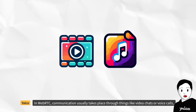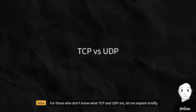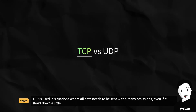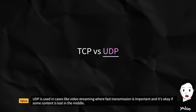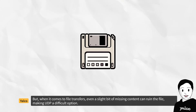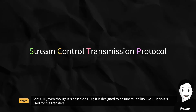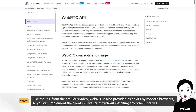In WebRTC, communication usually takes place through video chats or voice calls, so these protocols are based on UDP, which is suitable for fast, high-capacity transmission, rather than TCP, which guarantees reliability. TCP is used in situations where all data needs to be sent without any omissions, even if it slows down a little. UDP is used in cases like video streaming, where fast transmission is important and it's okay if some content is lost. In WebRTC, SRTP is most commonly used for real-time transmission of video or audio. But for file transfers, even a slight bit of missing content can ruin the file — for this, SCTP is used, as it ensures reliability like TCP even though it's based on UDP.